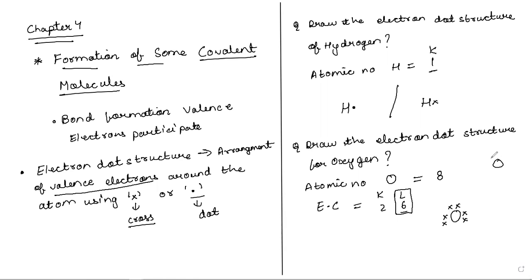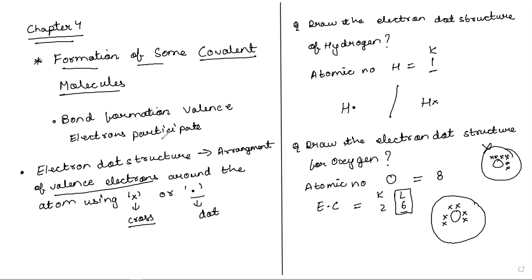The representation should be done in a proper, systematic way. Don't place all electrons on one side. Represent the electron dot structure in a proper systematic manner — this is the electron dot structure of oxygen. You can show either a cross or a dot. Don't use triangles, circles, or rectangles. One cross or one dot represents one electron; two crosses represent two electrons, and so on.